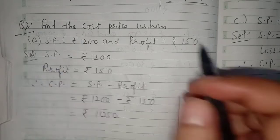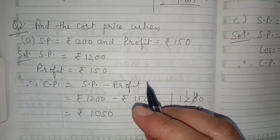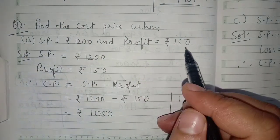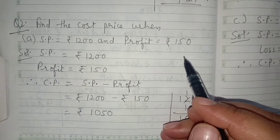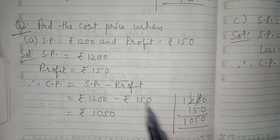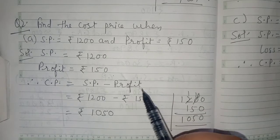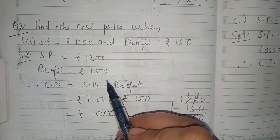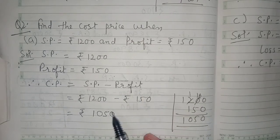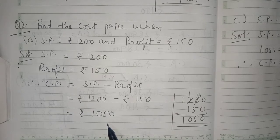Question number two: find the cost price. In this question we will find CP. SP is rupees 1,200 and profit is rupees 150. Write down SP rupees 1,200 and profit rupees 150. When there is a profit, CP equals SP minus profit. Putting the values and subtracting, the answer is rupees 1,050, which is the cost price.